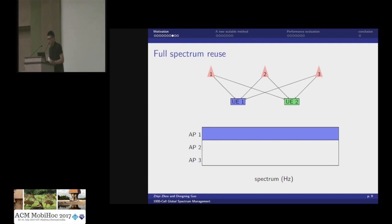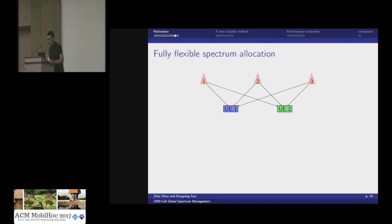Another case is full spectrum reuse, where AP1 uses the entire bandwidth to serve user 1, AP2 does nothing to avoid interference, and AP3 reuses the entire bandwidth to serve user 2. This applies when traffic loads of both users are relatively low and interference from AP1 to user 2 is low. In our work, we try to allow fully flexible spectrum allocation.